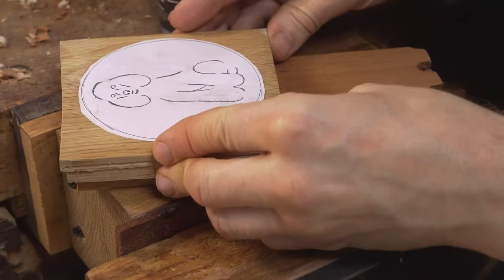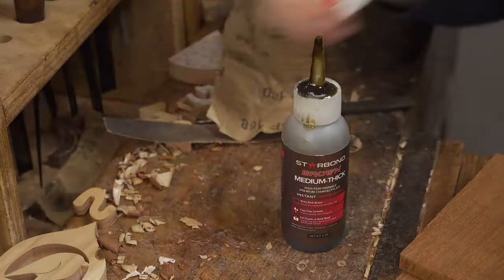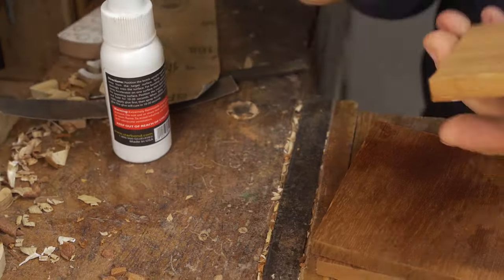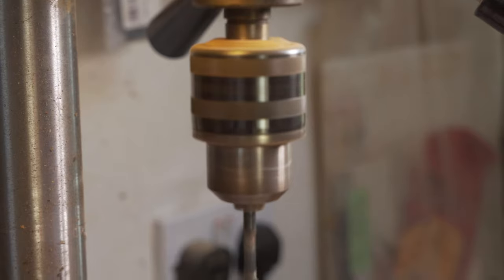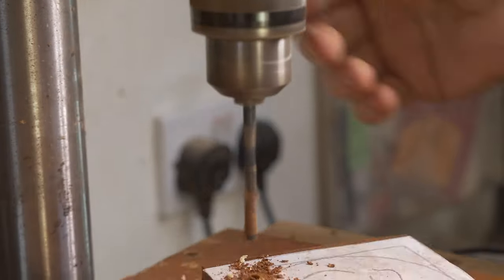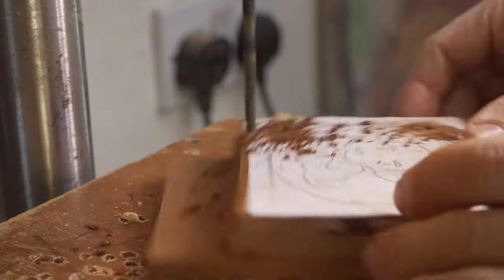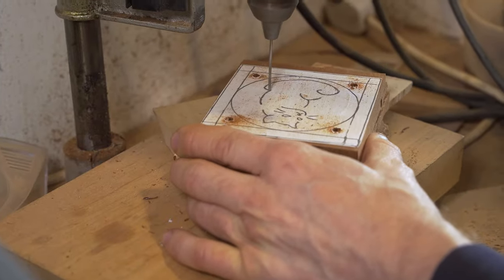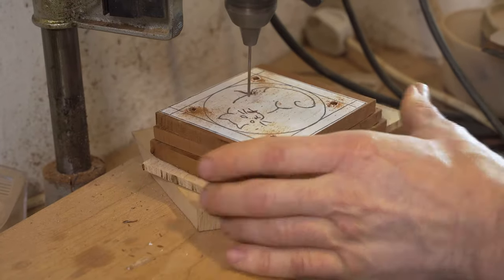Once the design is dry and the layers have been stacked together we proceed across to the pillar drills to do the holes for our pierce work. For the finer detail we use a smaller drill bit and the larger holes can be used for doing the larger pieces of pierce work.